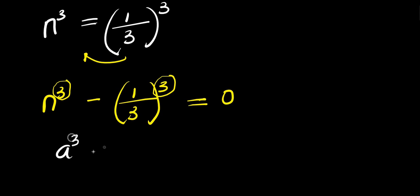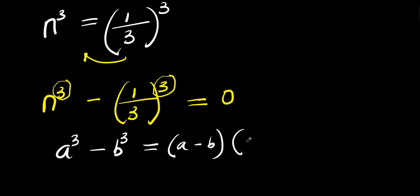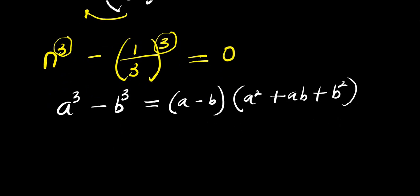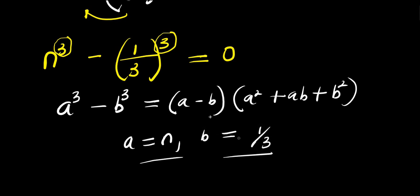So for us to expand this, we make use of this cubic identity: if you have a cubed minus b cubed, this equals (a minus b) times (a squared plus ab plus b squared). Don't forget that a equals n and b equals 1 over 3.